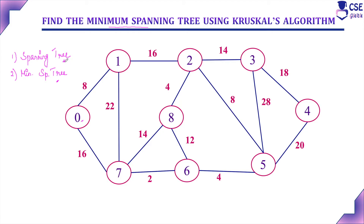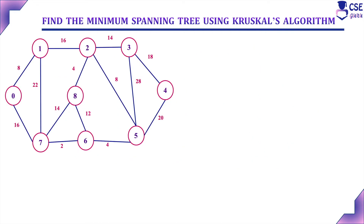We are going to find the spanning tree and minimum spanning tree using Kruskal's algorithm. The procedure is: first, consider an empty subgraph with only the vertices and no edges. Then in each step, consider the edge with the minimum cost and include it in the subgraph if it does not form a cycle. If inclusion of any edge forms a cycle, skip that edge. Continue until all edges have been considered.